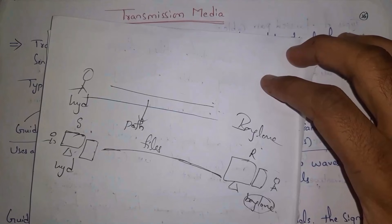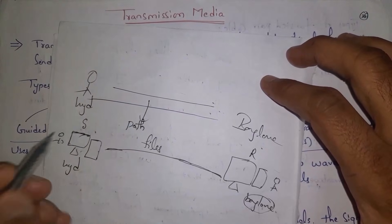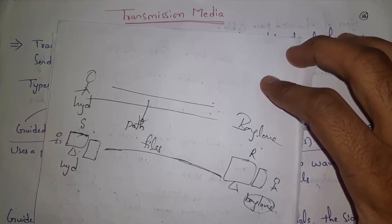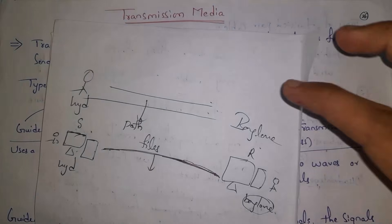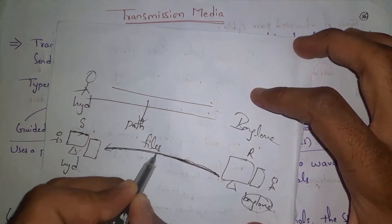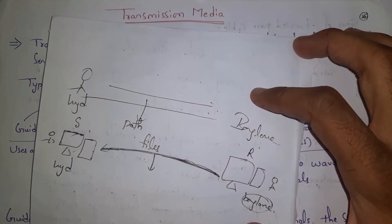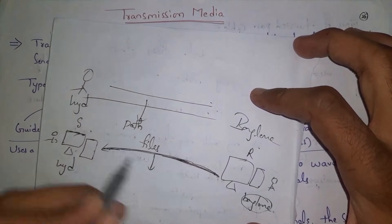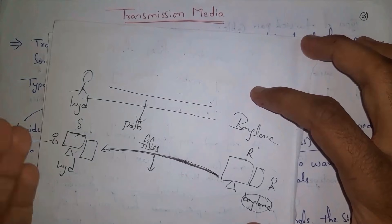Similarly, for example, I am in Hyderabad and I am doing office work on my computer. I want to send some important office files to my friend who is in Bangalore. As I am sending data I act as sender and my friend is the receiver. I need a path in order to connect these two devices, and we call this path transmission media — it connects sender and receiver so they can easily transfer files.